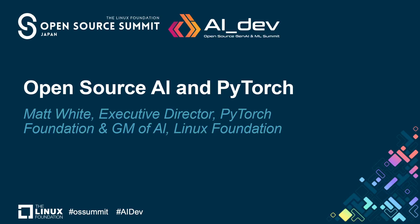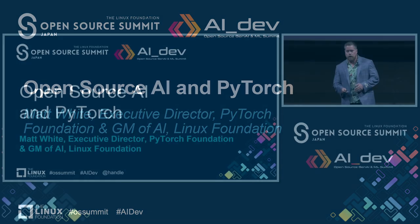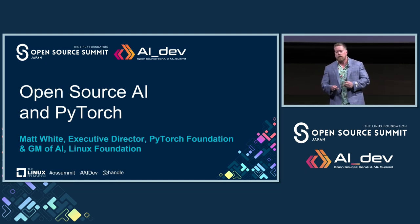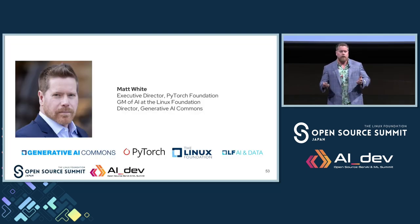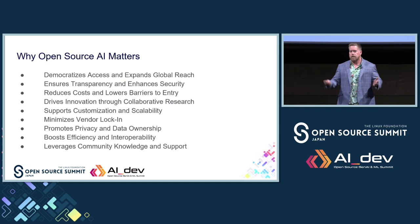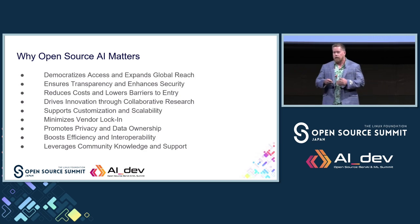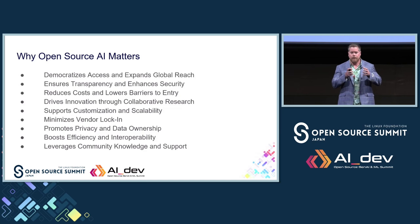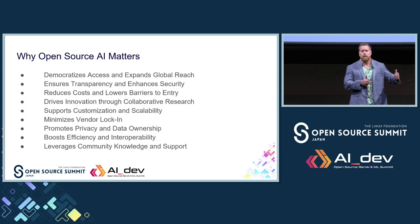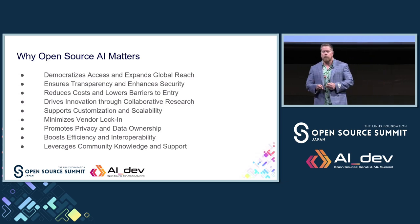Jim gave you two definitions you may not have heard previously: open source AI models and open science AI models. Both use permissive licensing. The real difference is that open science is geared towards academic research and reproducibility, and higher levels of transparency that we don't generally see with open source models.